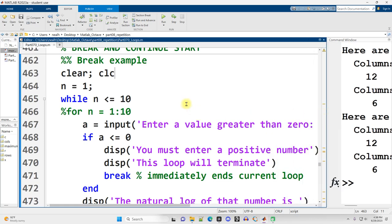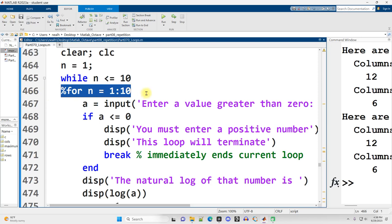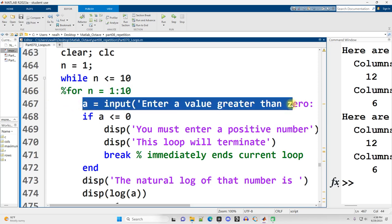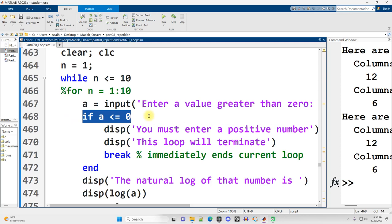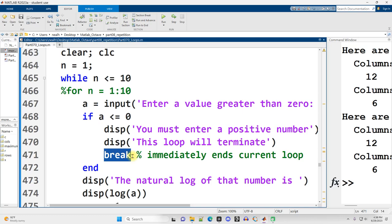And what I've got here in terms of my code is a while loop, although you can also do it with a for loop. And I'm going to ask the user to put in a value greater than zero. Now, if the value that they put in is less than or equal to zero, I'm going to display some output and then run the break command. And we'll see what happens when that runs.